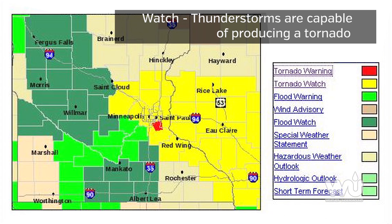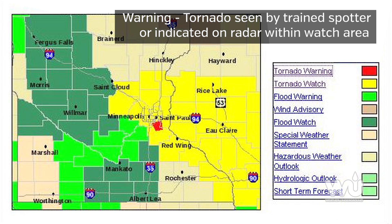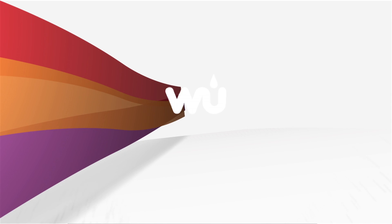Tornadoes can occur in any season and at any time, so it's important to be aware of your local weather advisories. A tornado watch is issued when conditions are favorable for tornadoes. A tornado warning is issued when a tornado has been sighted by spotters or indicated on radar, and is occurring or imminent in the warning area. If you see any of these indicators, stay alert and always pay attention to watches and warnings issued by your National Weather Service Office.